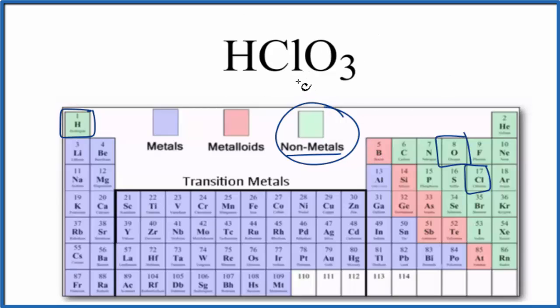Often HClO3 is considered to be a strong acid. When you put this in water, it'll dissociate into the hydrogen ion and then this polyatomic ion here, the chlorate ion.